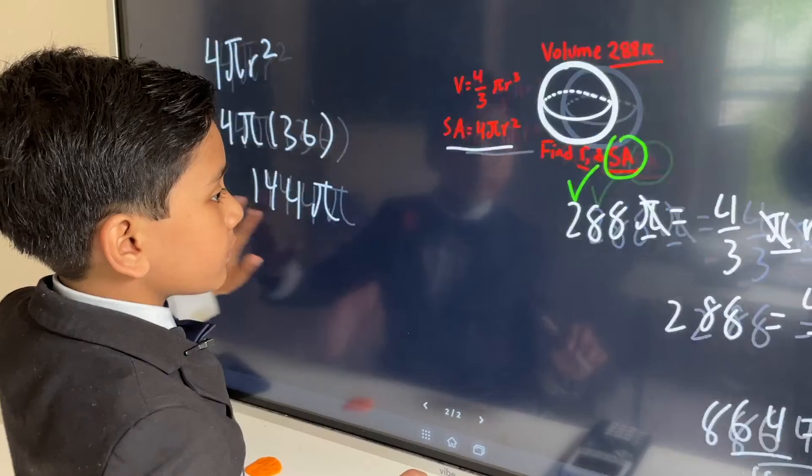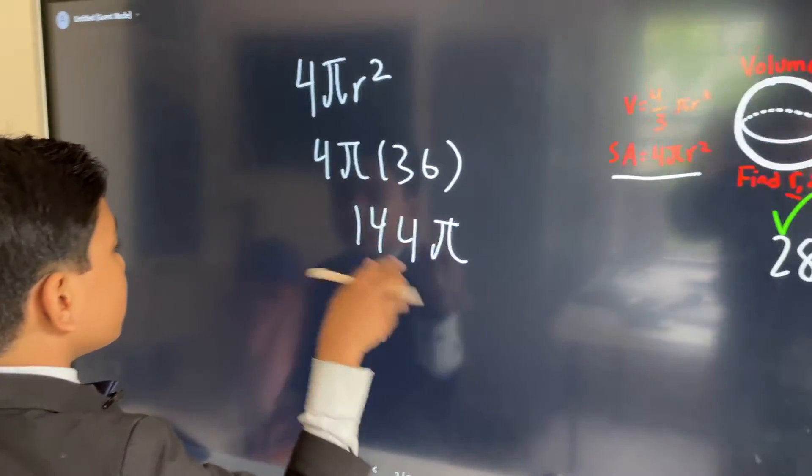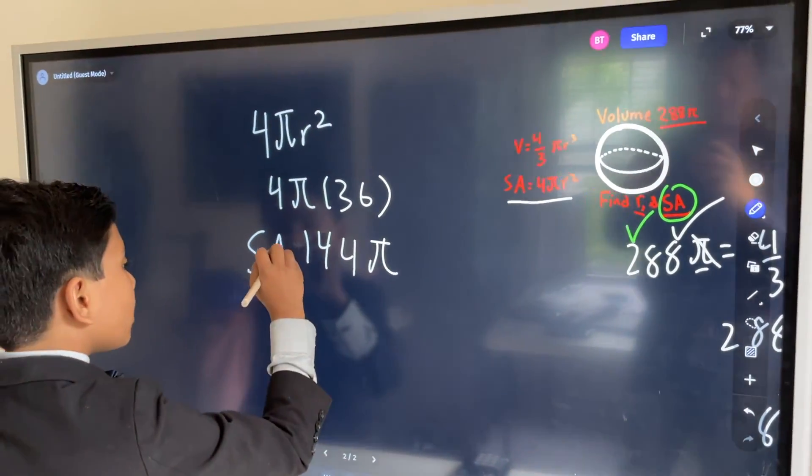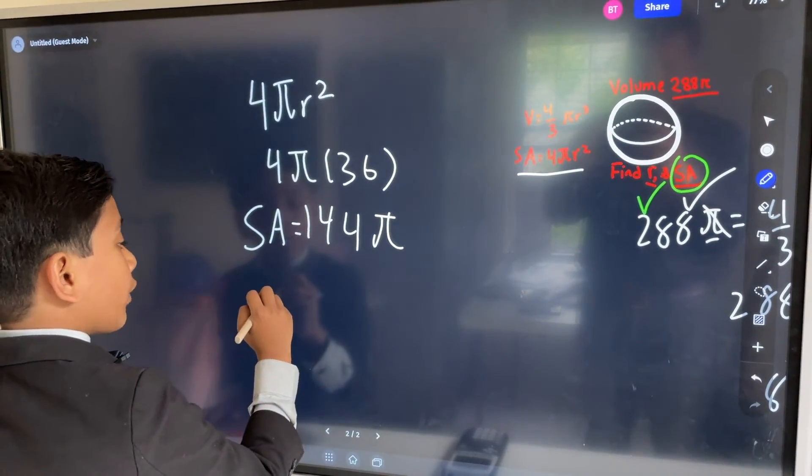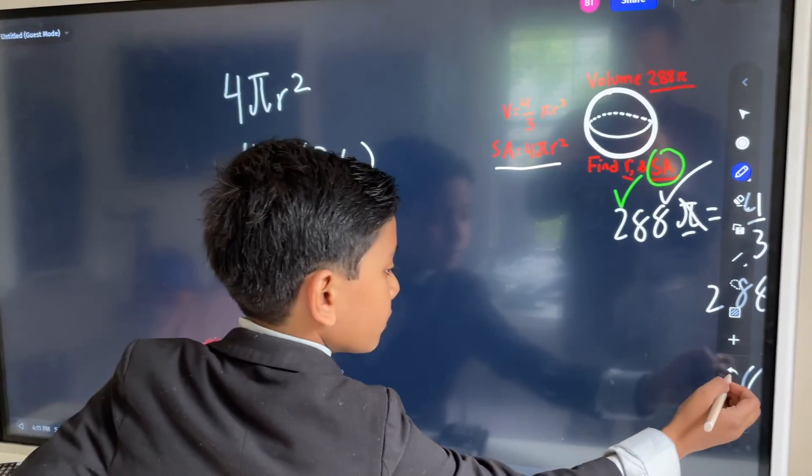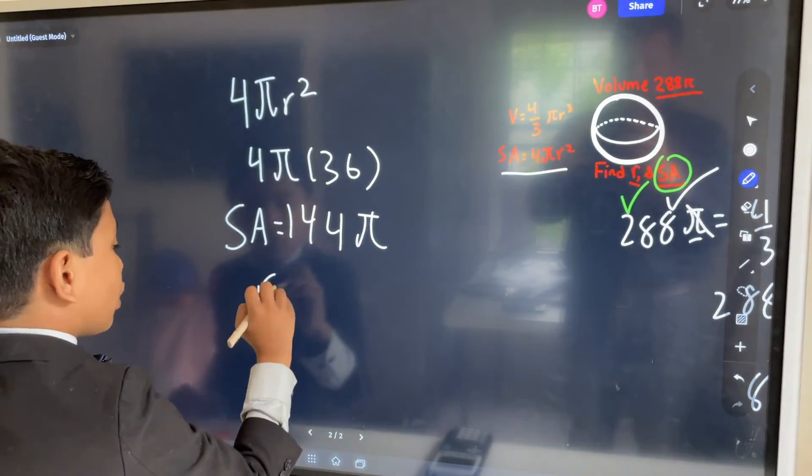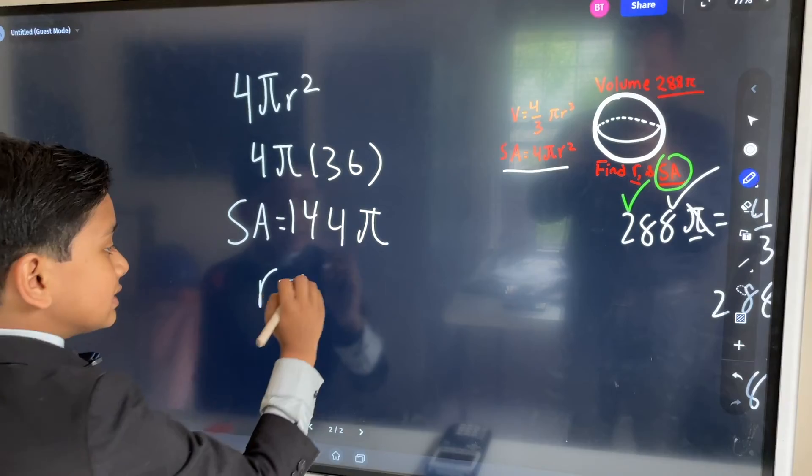So we found both of them. We know that the surface area was 144 pi. We know that our radius, or most people do it with a lowercase r, is going to be 6.